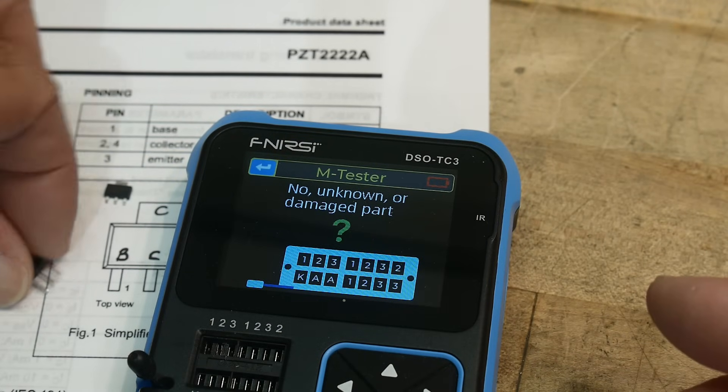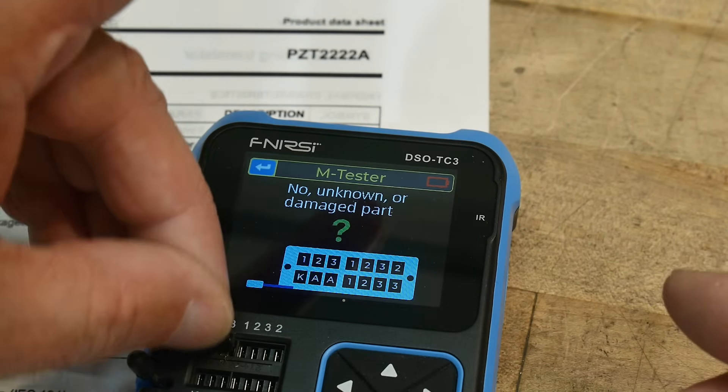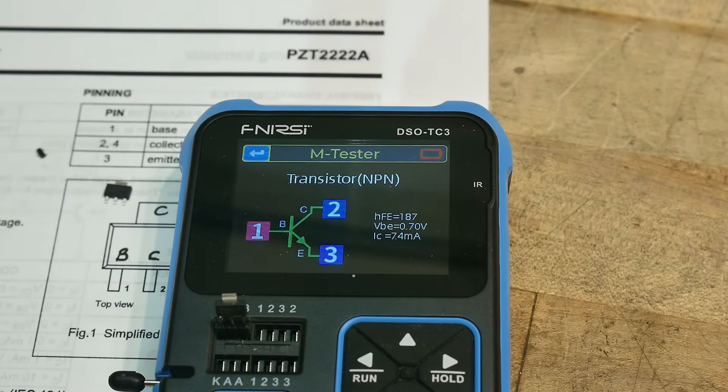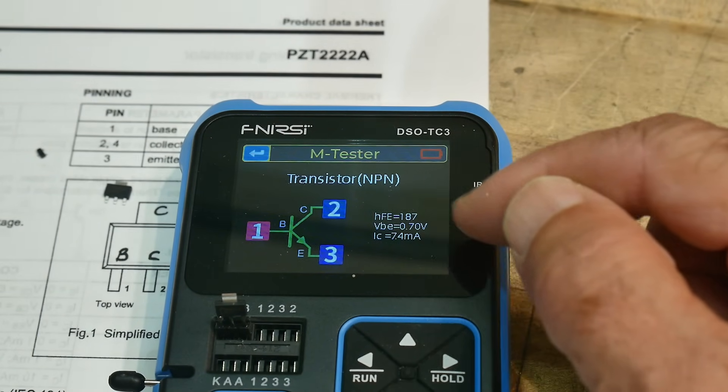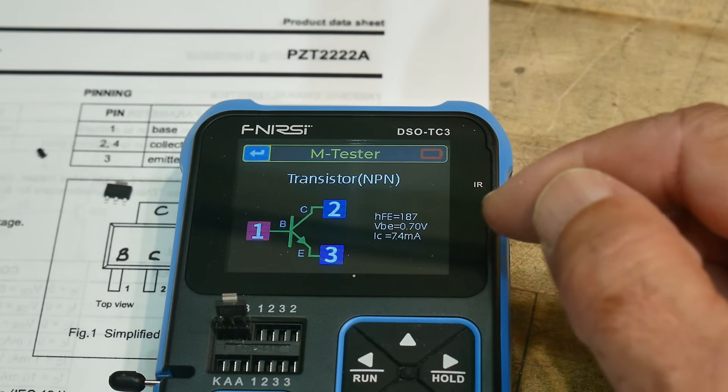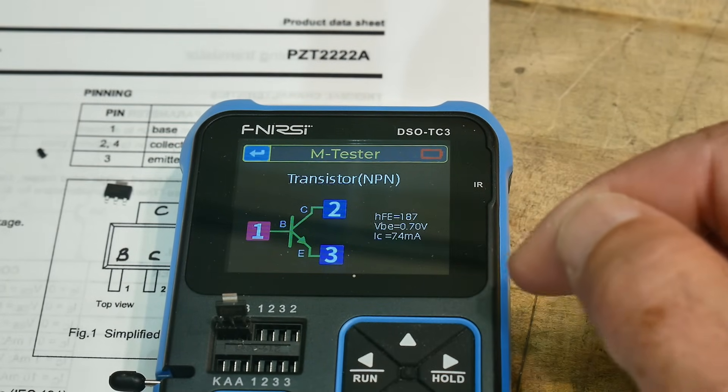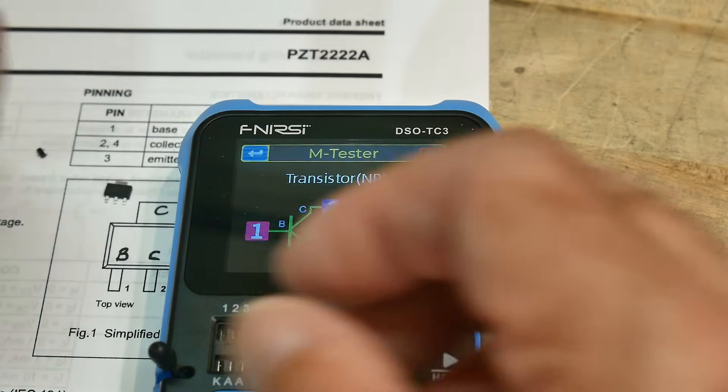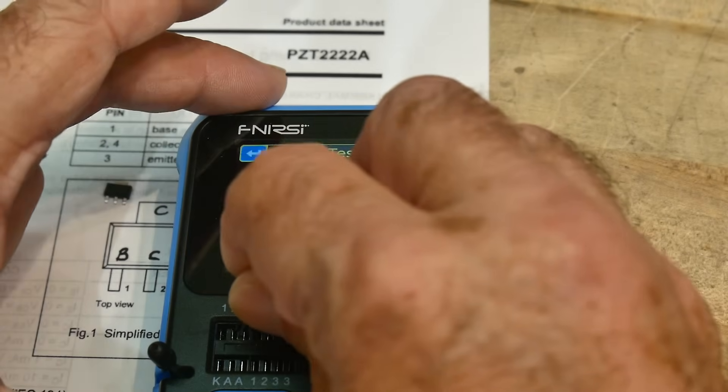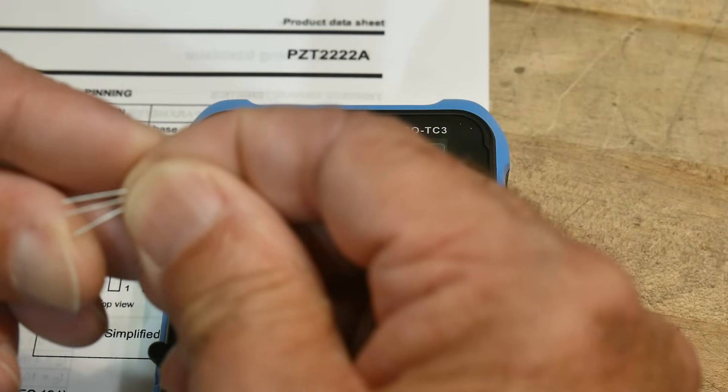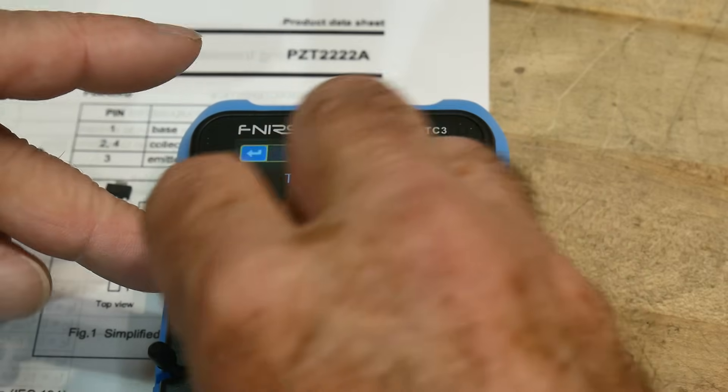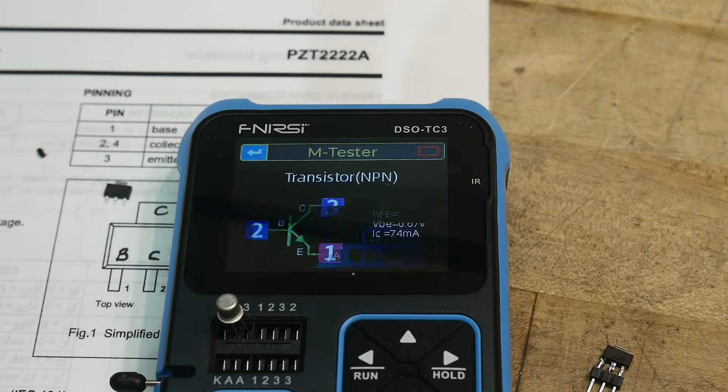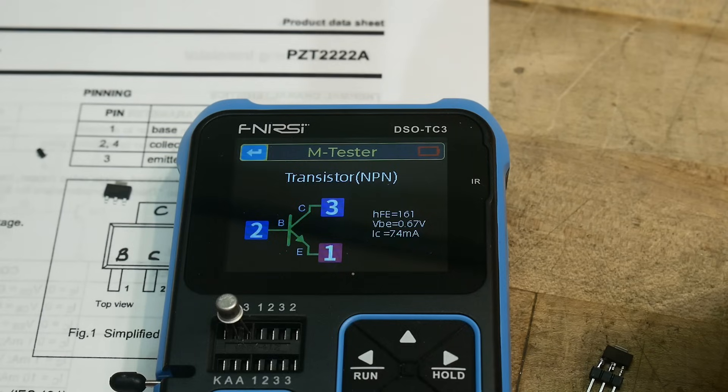Alright. So let's put on our new part and test it. And it says it's an NPN HFE of 187, VBE of 0.7 volts and tested at 4.7 milliamps. Alright. So 187 for that one. Let's put in an oldie moldie. This is actually from an HP stockroom from the way back days. NPN 161, a little bit lower, not bad.